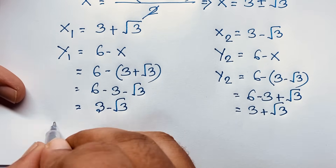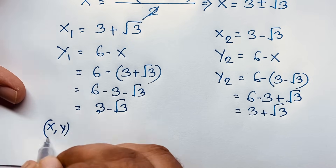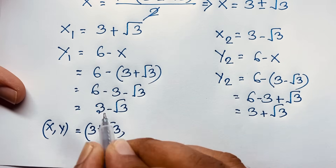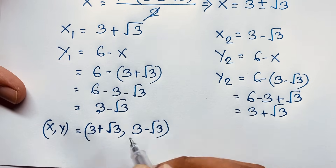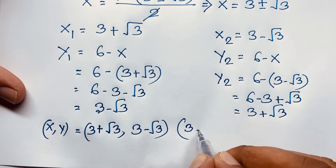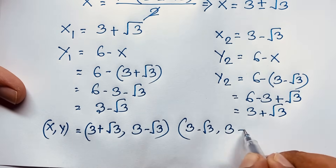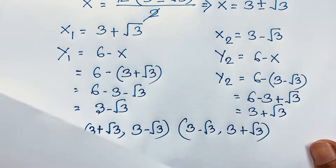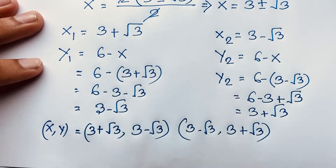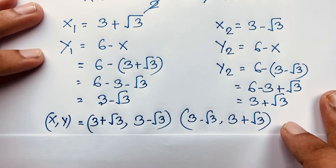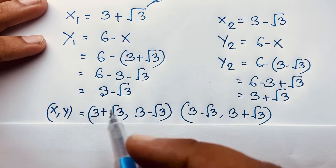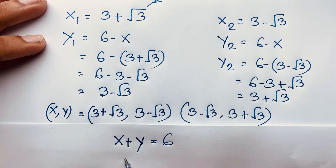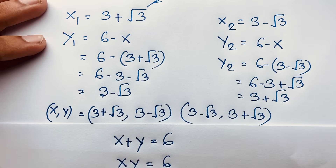So our final solution is: when x is equal to 3 plus square root 3, y is equal to 3 minus square root 3; and when x is equal to 3 minus square root 3, y is equal to 3 plus square root 3. Let's verify this is our final solution for this math problem. Our question was x plus y is equal to 6 and x times y is equal to 6.